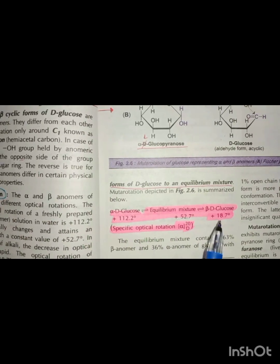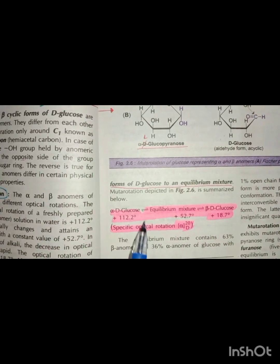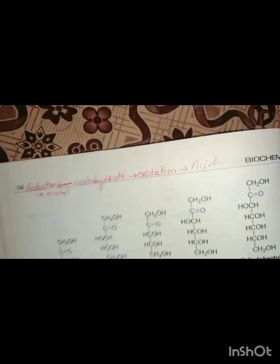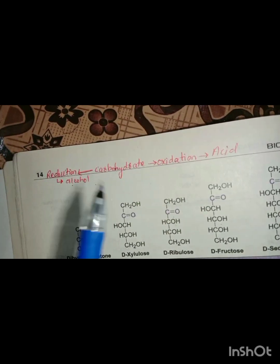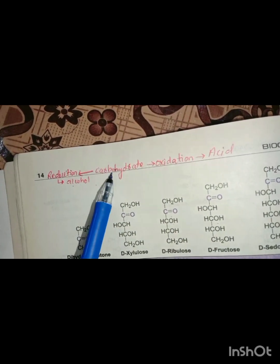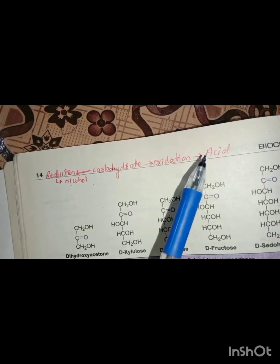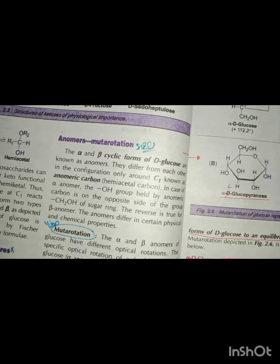We have to ask MCQs based on this scheme. When we reduce carbohydrates, it becomes an alcohol. And when it becomes oxidized, it becomes an acid.